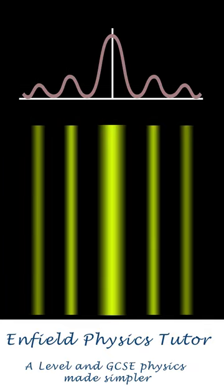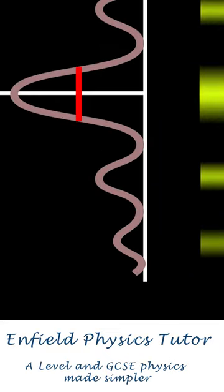Importantly, the central maximum is twice as wide as the other fringes, and this is how you can tell that you have a single slit rather than a diffraction grating.